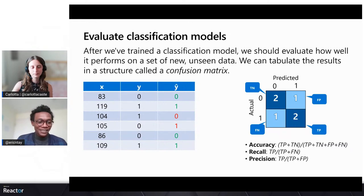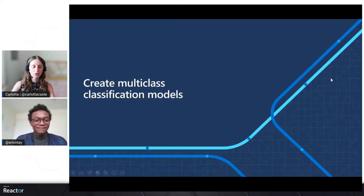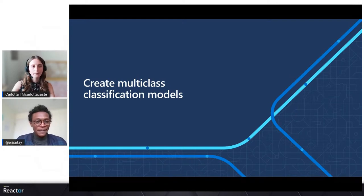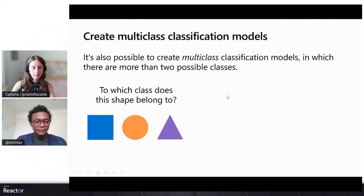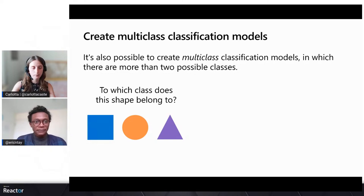In some cases we need to classify an object in more than two categories, and a binary classification is not enough anymore — we need a multi-class classification model. A multi-class classification model is able to answer questions like: to which class does this shape belong? With more than two options available — a square, a circle, and a triangle. In most machine learning frameworks, including Tidy Models, implementing a multi-class classification model is not significantly more complex than a binary one. In fact, multi-class classification can be thought of as a combination of multiple binary classifiers.